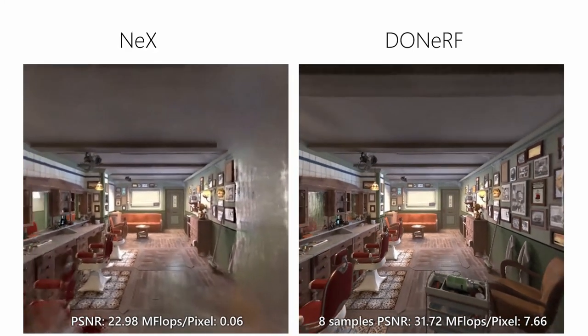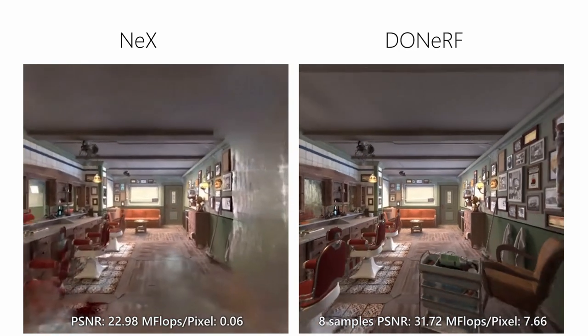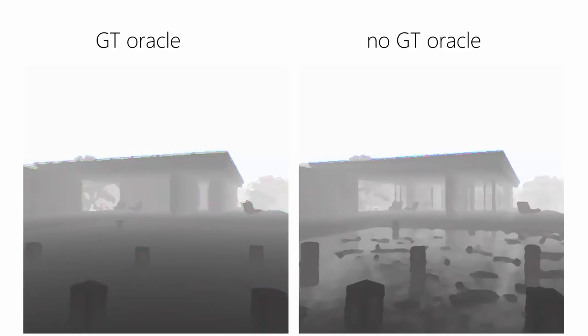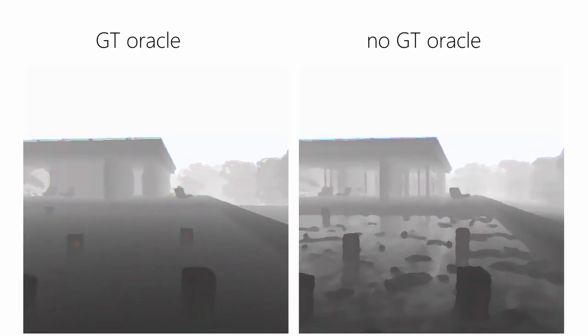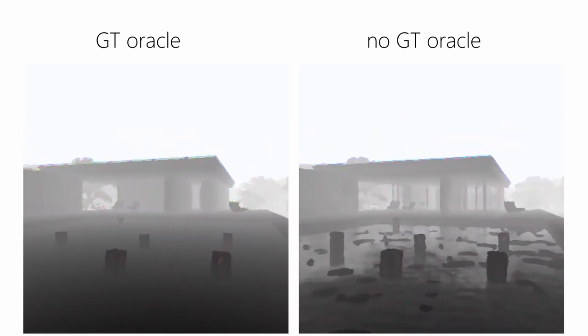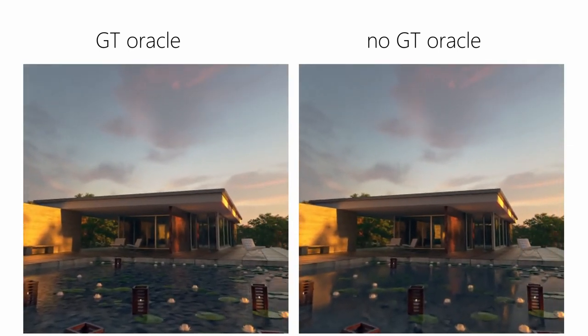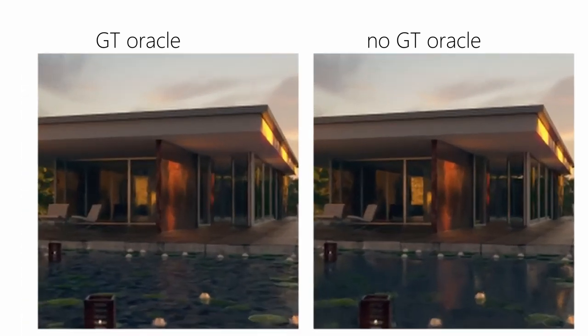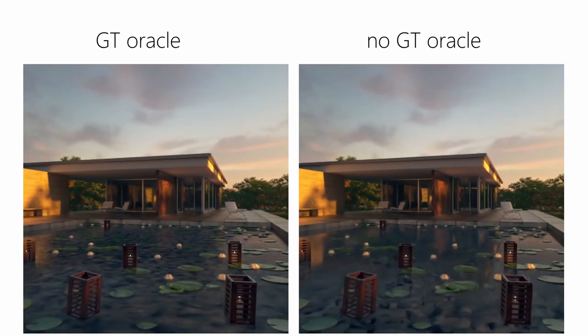To demonstrate a proof-of-concept DoNerf that also works without available reference depth, we train our depth oracles using depth maps extracted from a dense NeRF. Looking at the oracle output in the pavilion scene, the oracle trained on reference depth tends to be slightly more consistent and accurate. However, extracted NeRF depth maps also provide a benefit: refractions and reflections can now be represented more accurately, as the oracle learns to place samples not just at the surface depth.